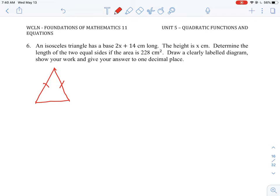We can indicate that by a tick mark there. We also know that the base is 2x plus 14 and the vertical height in the triangle is equal to the value of x.